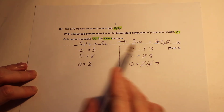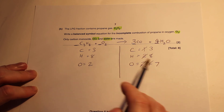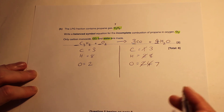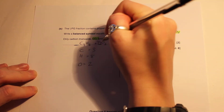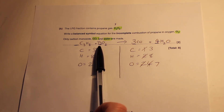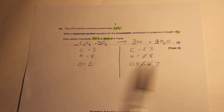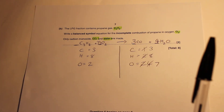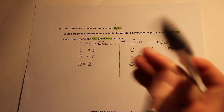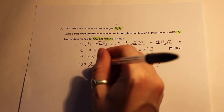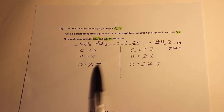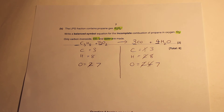Then check the left-hand side: carbons are fine, hydrogens are fine, it's only oxygen that's out. Seven divided by two gives you three and a half, so put 3.5 in front of the oxygen. You are allowed fractions — if you think you can't have a fraction, you're wrong. Three and a half gives us seven oxygens, which means we have three carbons each side, eight hydrogens each side, and seven oxygens each side. That gets us our two marks.